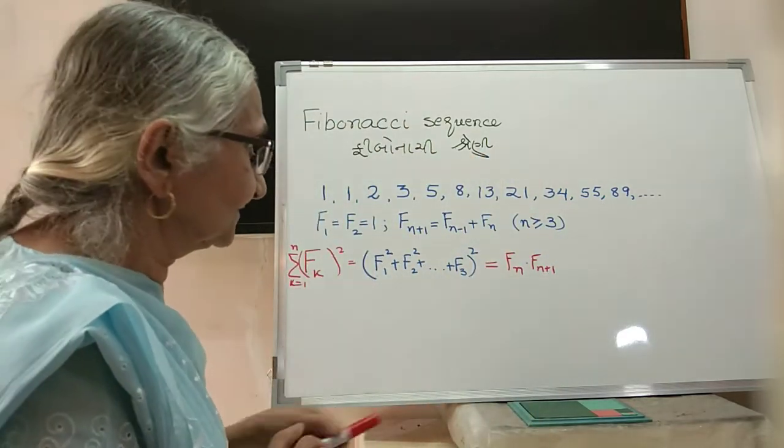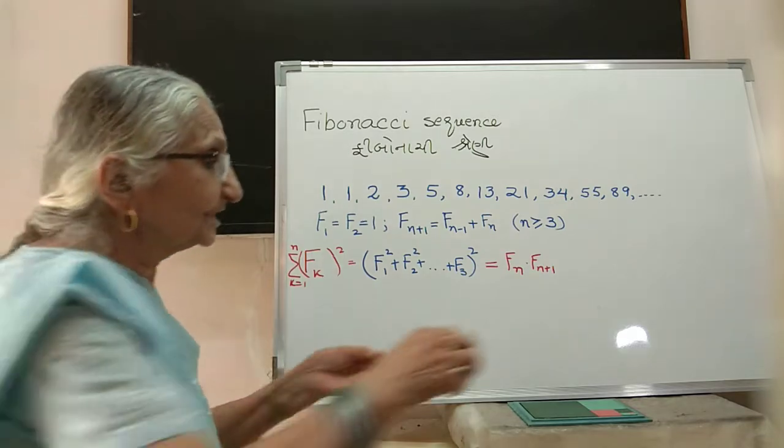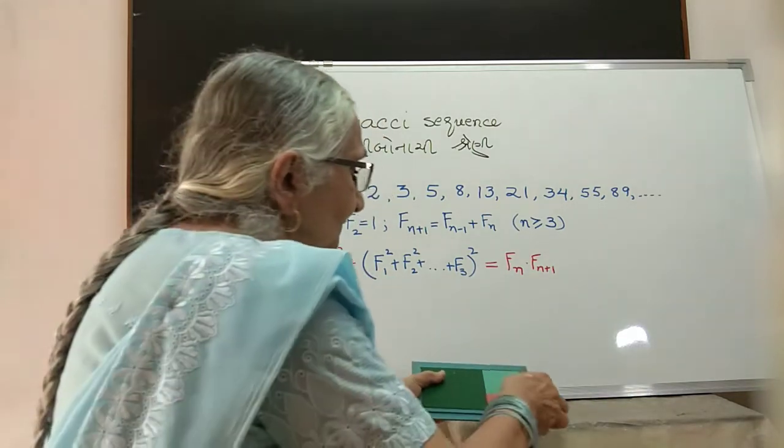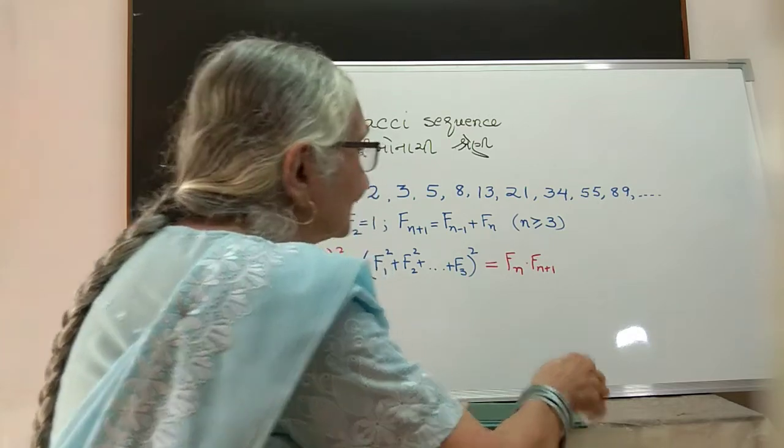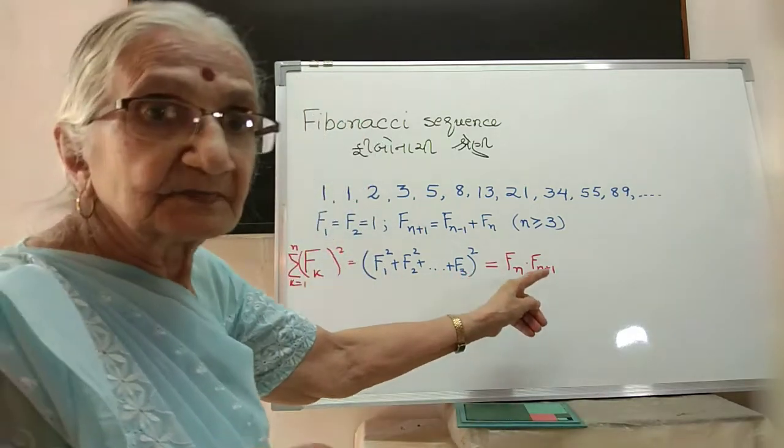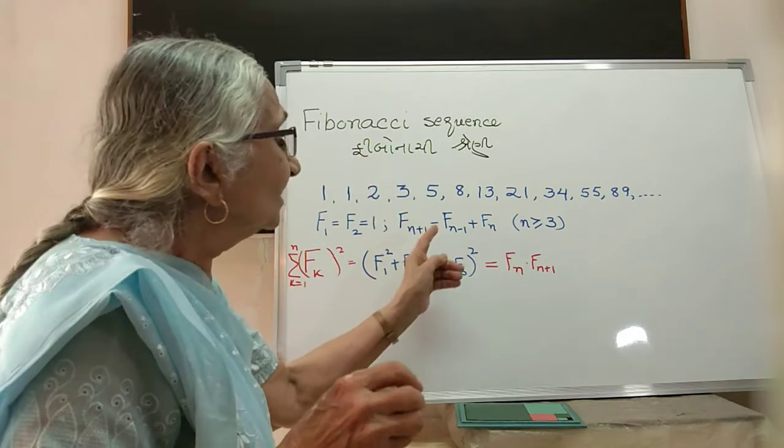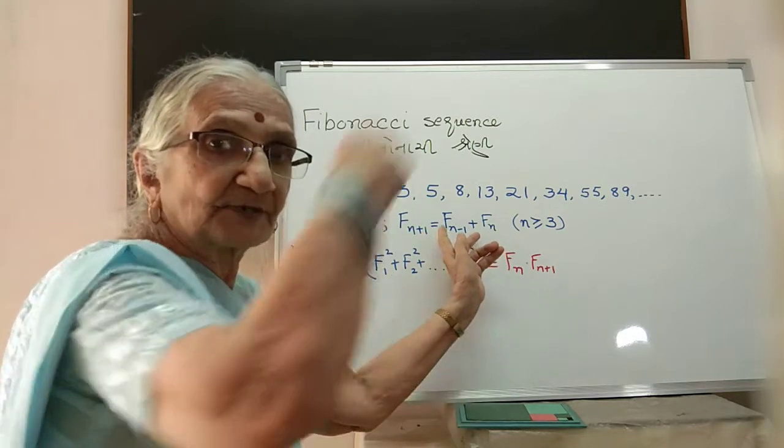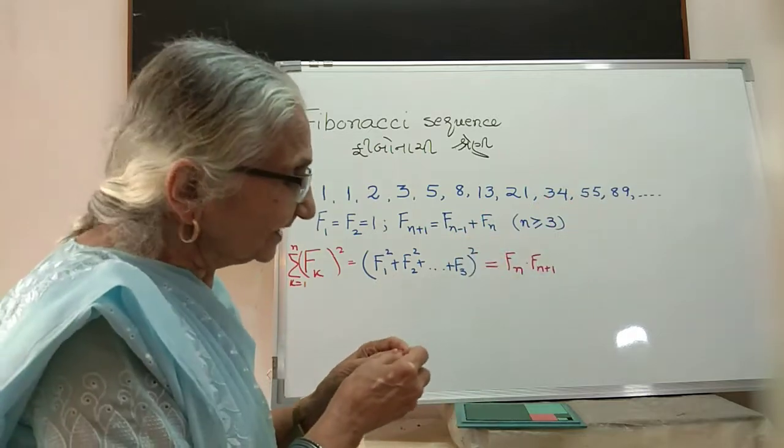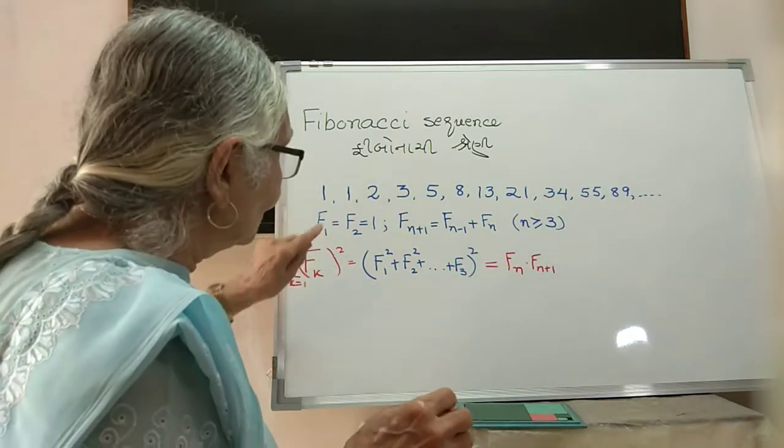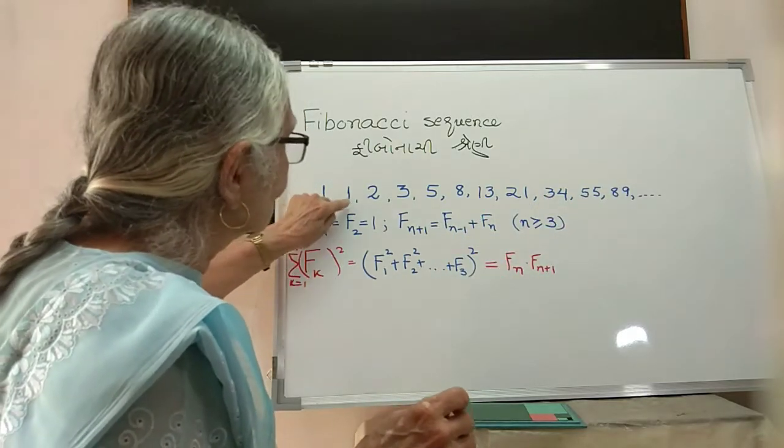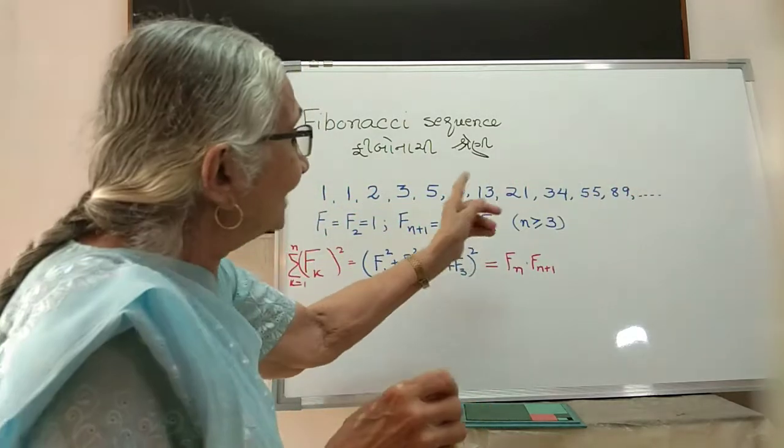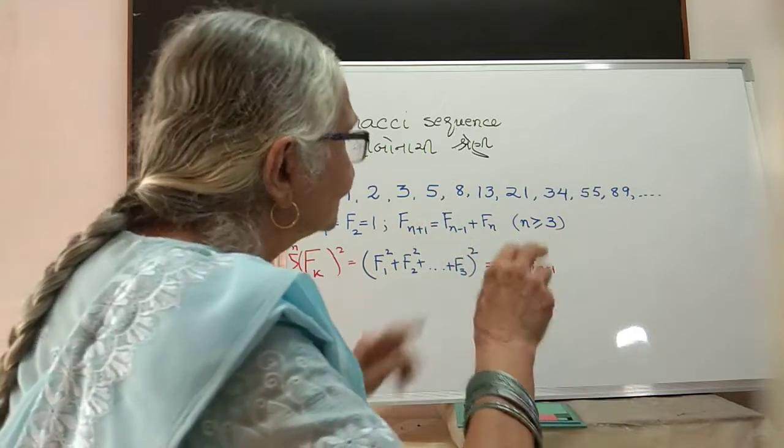We shall show it with the help of a model. Remember, these are all Fibonacci numbers, and for Fibonacci numbers we always know that when you add the two successive ones you get the third one. We are starting with: what we want is 1² + 1² + 2² + 3² + 5², etc., and if we go up to 8², it should equal 8 × 13.